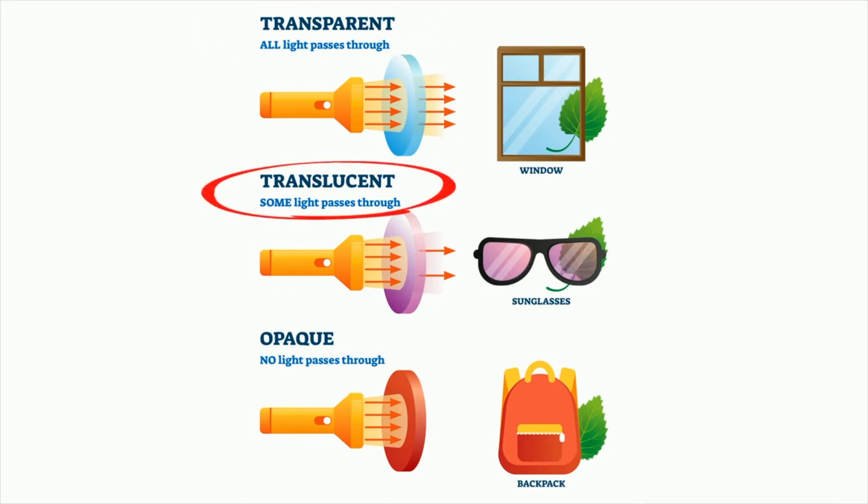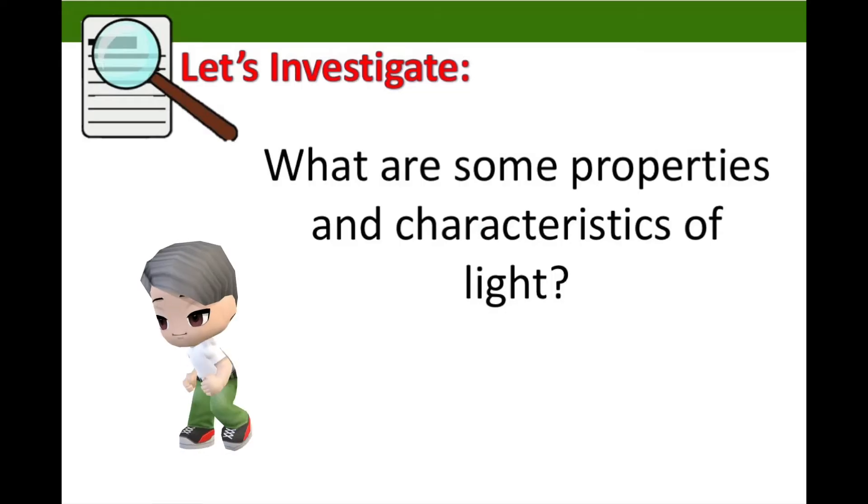As light passes through objects, it behaves differently when it falls on different objects. When light falls on the surface, it may be reflected or refracted. So let's get to know more about these properties of light. For today's lesson, let's investigate some properties and characteristics of light energy.